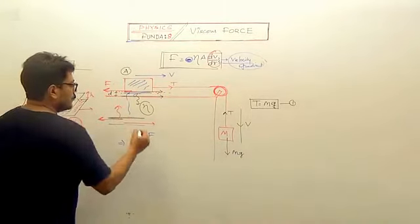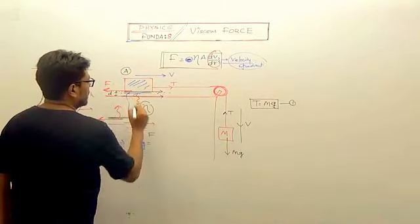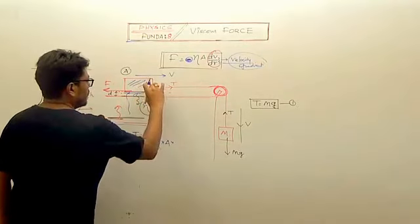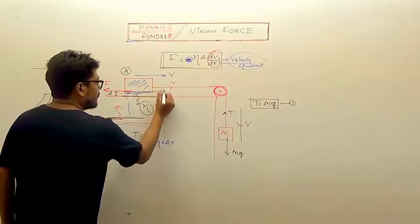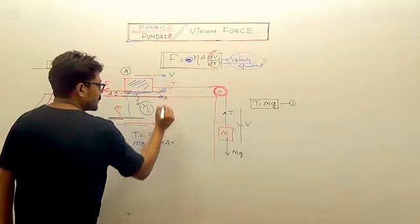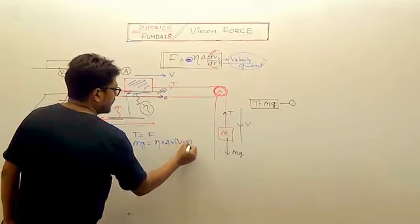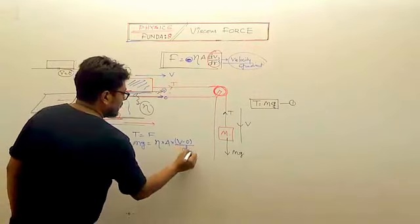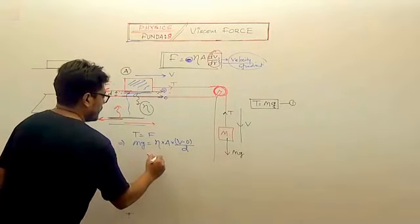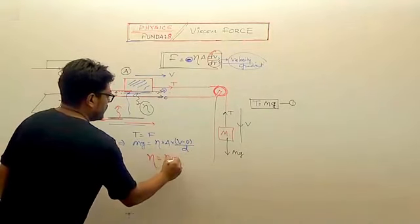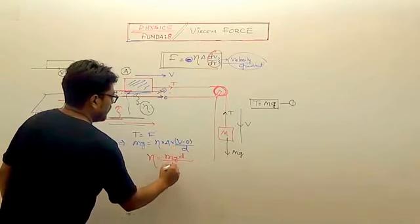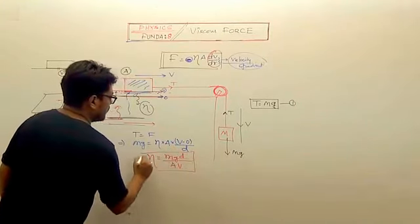The minus sign shows it opposes relative motion. Mg equals F, which is eta times A times velocity gradient. The topmost is moving with v and the lowest is at rest with the table, so v minus zero upon d. We can easily find eta equals Mg D upon A v. This is the final answer.